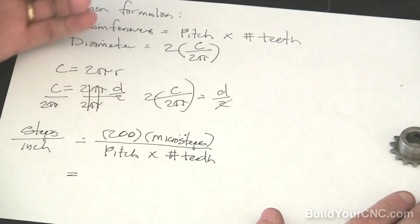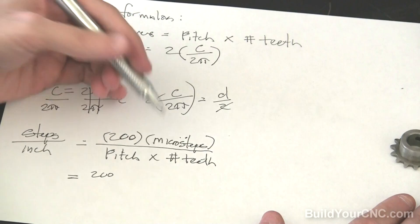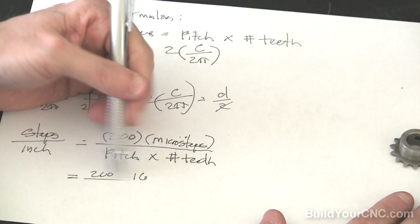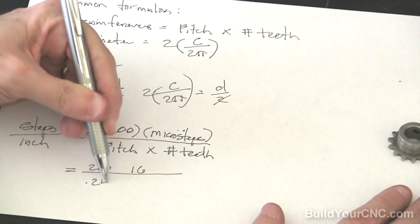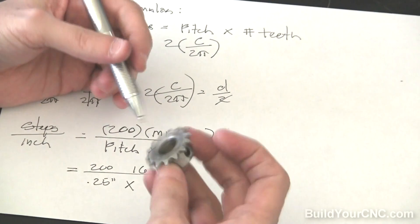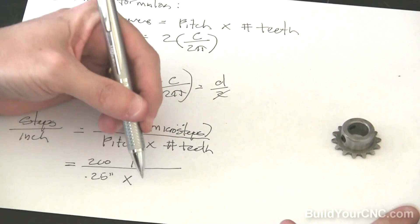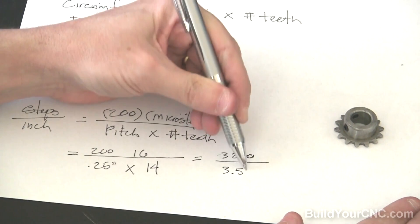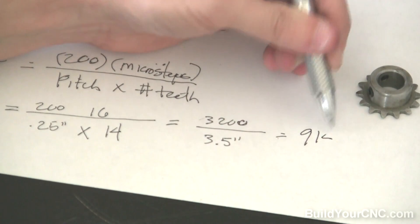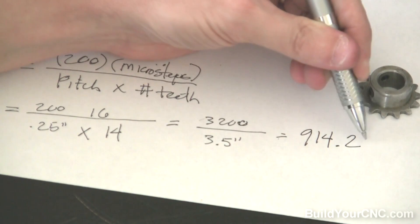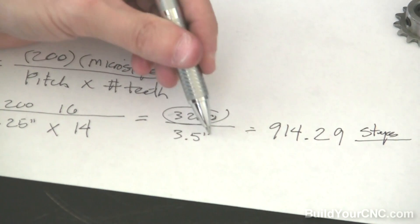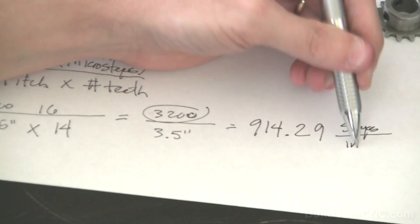For instance, if you have a stepping motor that has 200 steps per revolution and you're going to be running at 16 microsteps per step, the pitch is 0.25 inches, which is what this would be. And this would be 14 teeth. So this would be 3200 over 3.5 inches, which yields 914.29 steps, which is this over here, steps, per inch, which is over on the bottom. And this would be a bit of a standard.